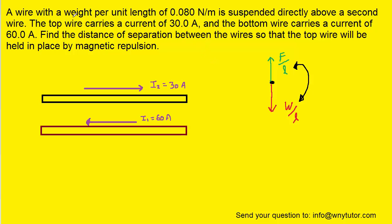And since the question gave us the weight per unit length of 0.08 newtons per meter, that means that this value for the magnetic force is also 0.08 newtons per meter.